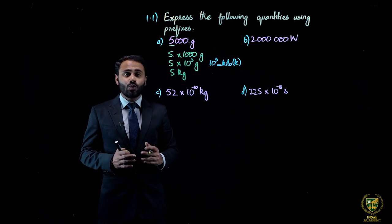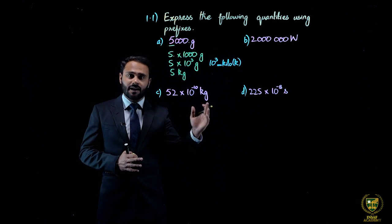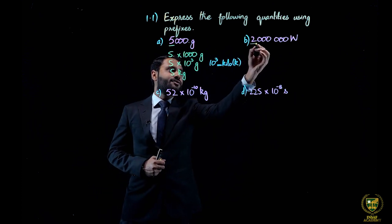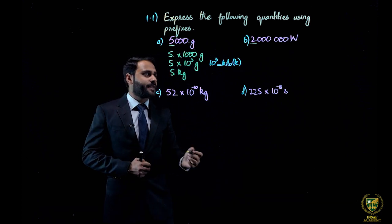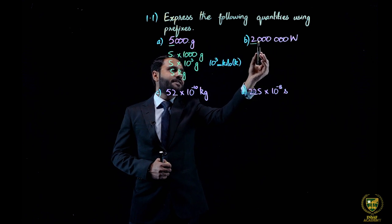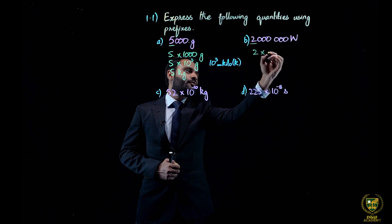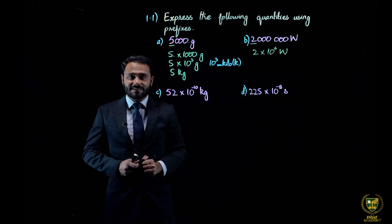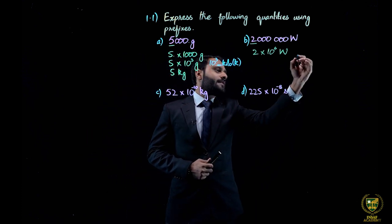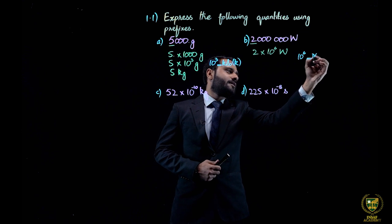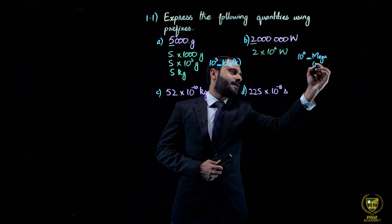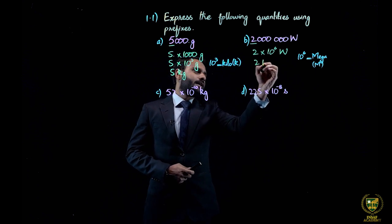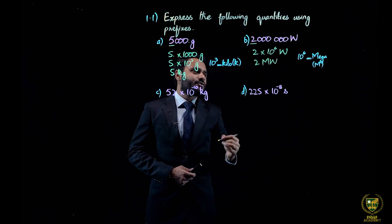Part B is 2 million watt. The point lies at the last position. According to standard form, the point comes after the first non-zero digit which is 2. We move the point 6 digits to the left side. So I can write here 2 into 10 raised to the power 6 watt. We know that 10 raised to the power 6 has the prefix mega, represented by capital M. So the answer is 2 megawatt.